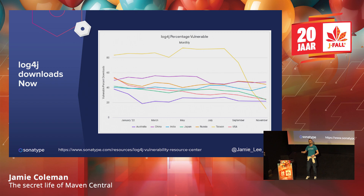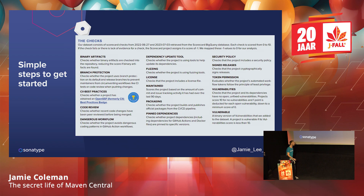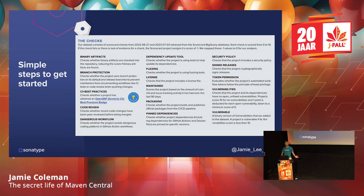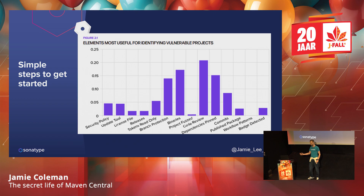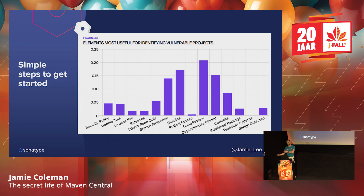There are simple ways we can start increasing our security. OpenSSF have a scale and a way they look at open source projects' health — these are some of the factors they use. Simple things like branch protection — so many people don't have branch protection. Code reviews — coming from an IBM background, nothing would ever get into our pipeline without code reviews. These are very simple things we can all do as developers to start improving our security without putting much effort in.